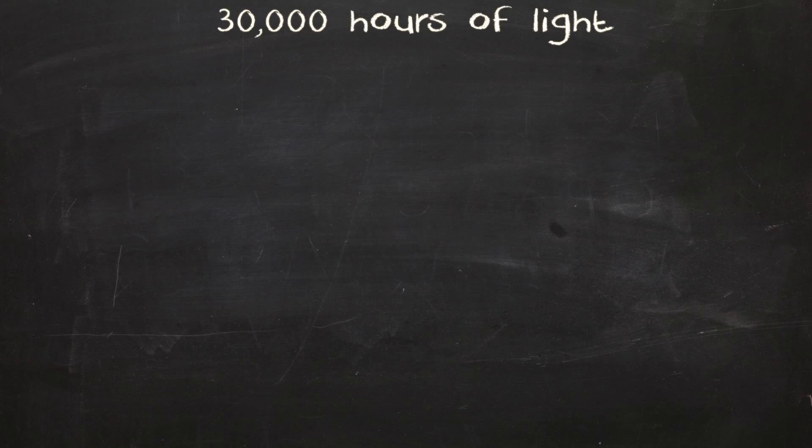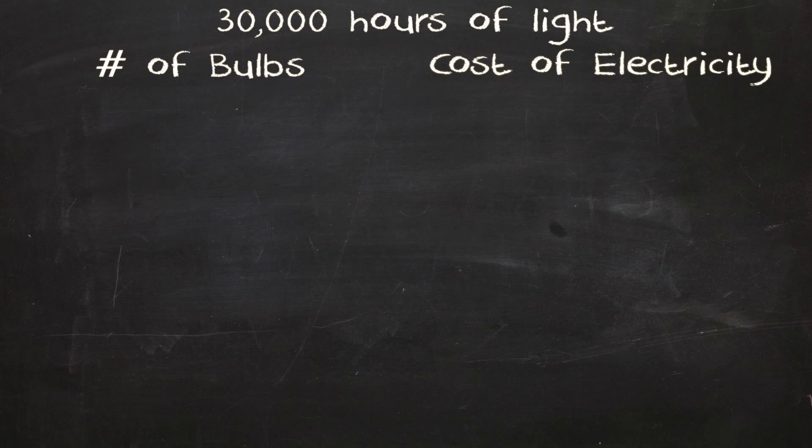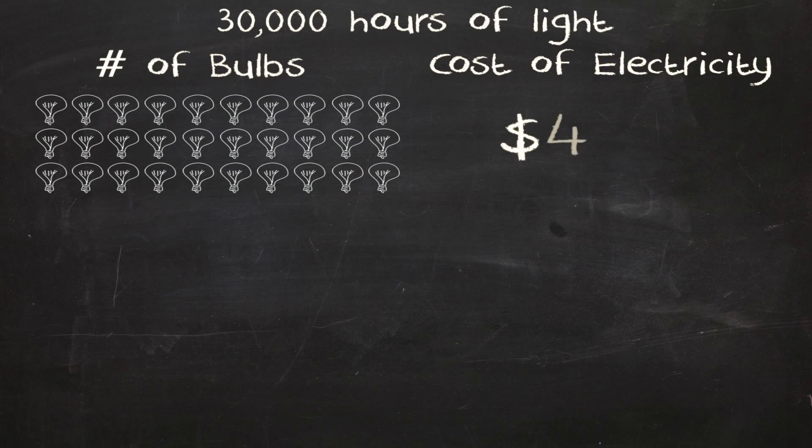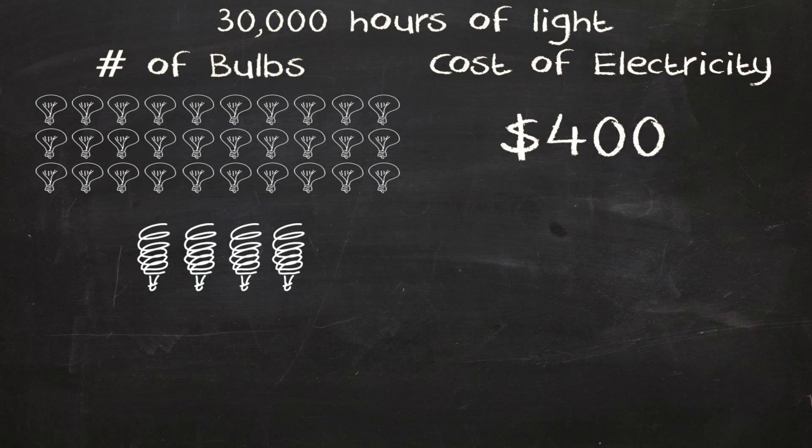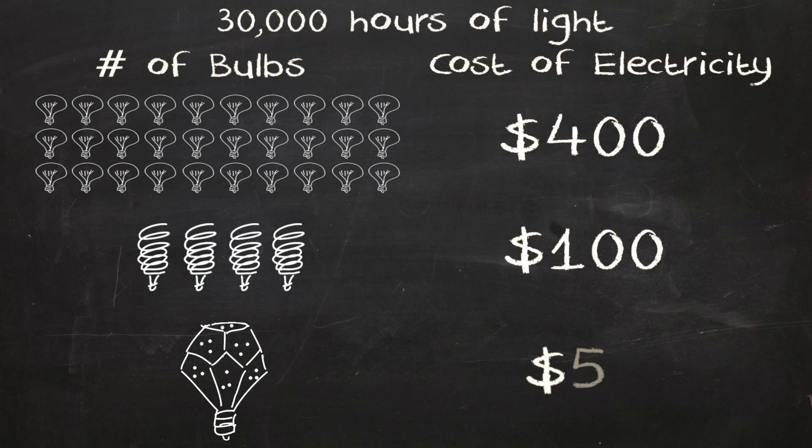The cost benefit of the NanoLight depends on the type of bulb that you're replacing. To run 30,000 hours, a 100 watt incandescent bulb will have to be changed 30 times and will cost a total of $400 in electricity. A comparable CFL will need to be replaced 4 times and will cost $100 in electricity. The NanoLight will run reliably for the full 30,000 hours and will cost you only $50 in electricity.